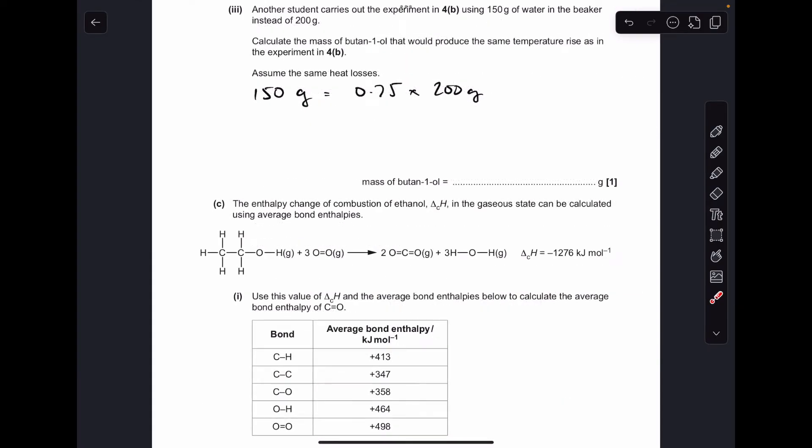Moving on to the next part. So the other student has used 150 grams of water in the beaker rather than 200. So everything kind of happens in proportion with these experiments. So 150 grams is three quarters or 0.75 of 200 grams. So that means that the mass of fuel that the other student's going to need is going to be 0.75 times what the other person used. So 0.9825 grams.